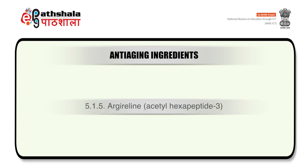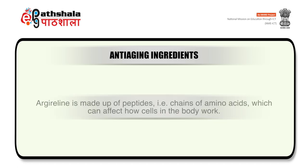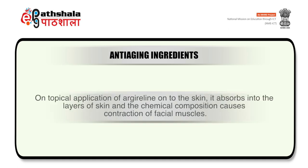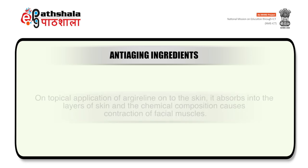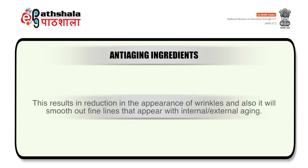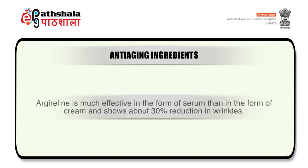The next ingredient is argireline, also known as acetyl hexapeptide-3. It is made up of peptides — chains of amino acids — which can affect how cells in the body work. On topical application onto the skin, it absorbs into the layers of skin and the chemical composition causes contraction of facial muscles. This results in reduction in the appearance of wrinkles and smoothing out of fine lines that appear with internal or external aging. Argireline is much more effective in the form of serum than cream and shows about 30% reduction in wrinkles.